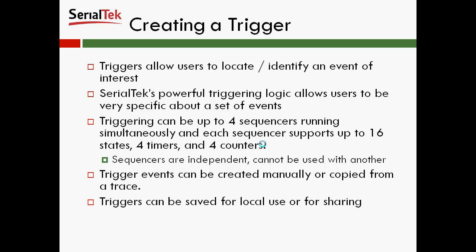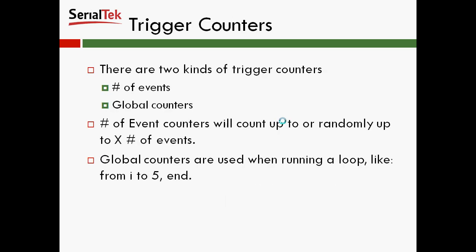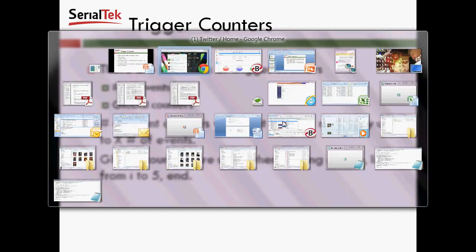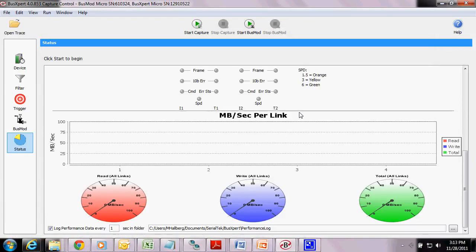To cut down on the jargon a little bit about creating a trigger: you can use the analyzer to create a very complicated set of triggers — look for event A, followed by event B, followed by event C, and event D, or go back to A. Essentially just a very complicated logical loop, or as simple as just look for an event and trigger. Let me jump into the software so you can see that.